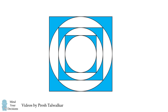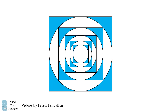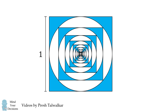Now repeat this process indefinitely. The question is: if we repeat this infinitely many times, and the first square has a side length equal to 1, what is the total sum of all the areas that are shaded in blue?